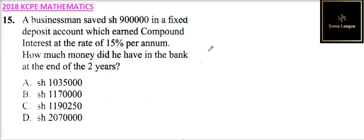Question number 15. A businessman saved 900,000 shillings in a fixed deposit account which earned compound interest at the rate of 15% per annum. How much money did he have in the bank at the end of two years?